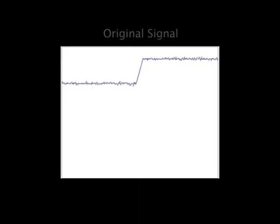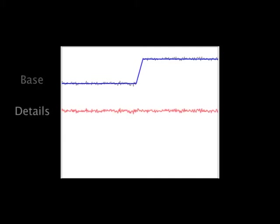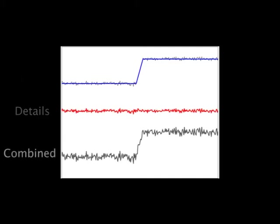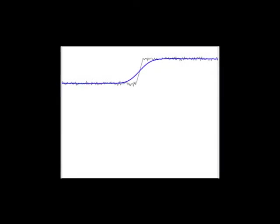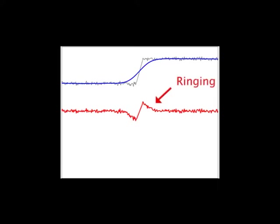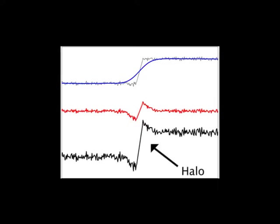By smoothing a signal, one can extract the details at a given scale, which can then be manipulated and recombined with the base to yield the result. When performing the smoothing, it is important to avoid blurring of strong edges, since this introduces ringing into the detail layer and may result in halos once the base and the detail are recombined.